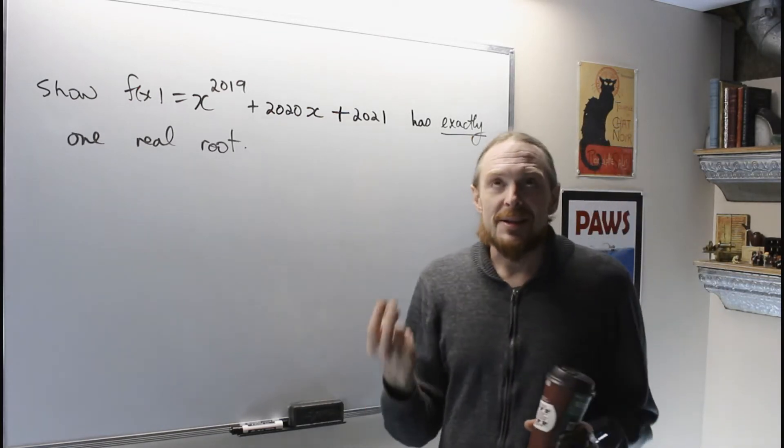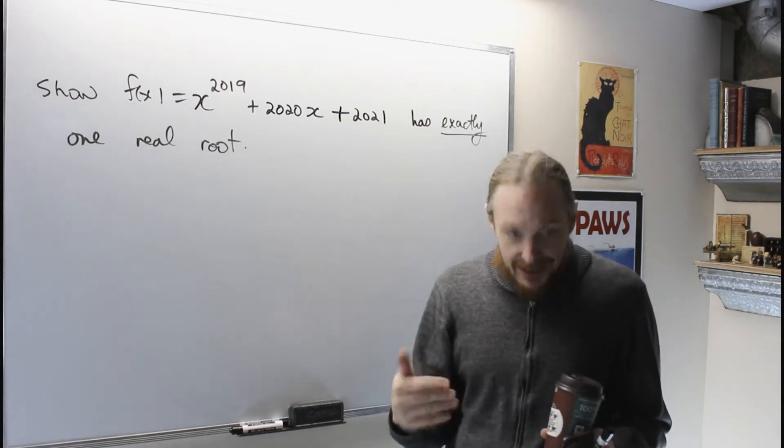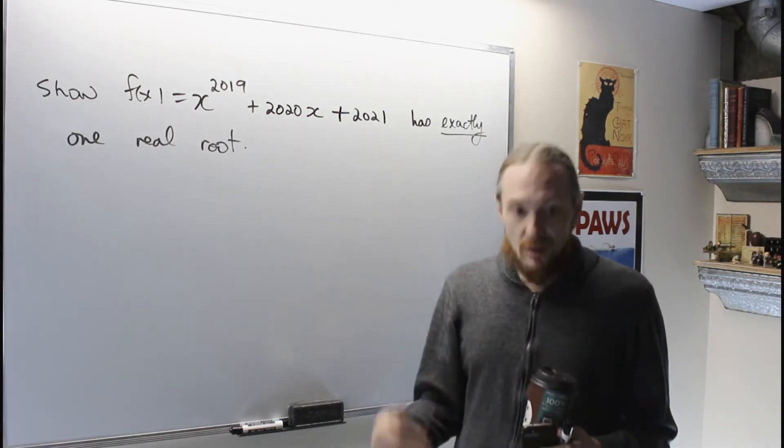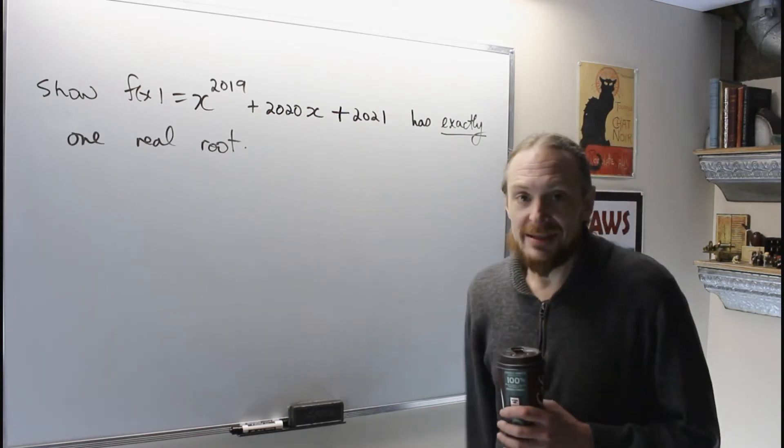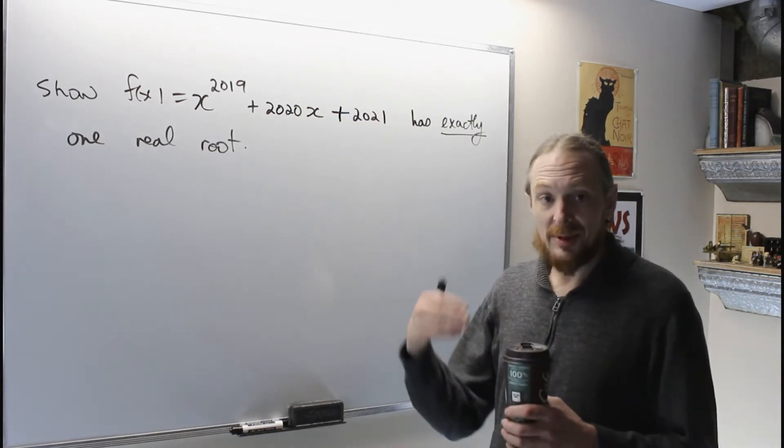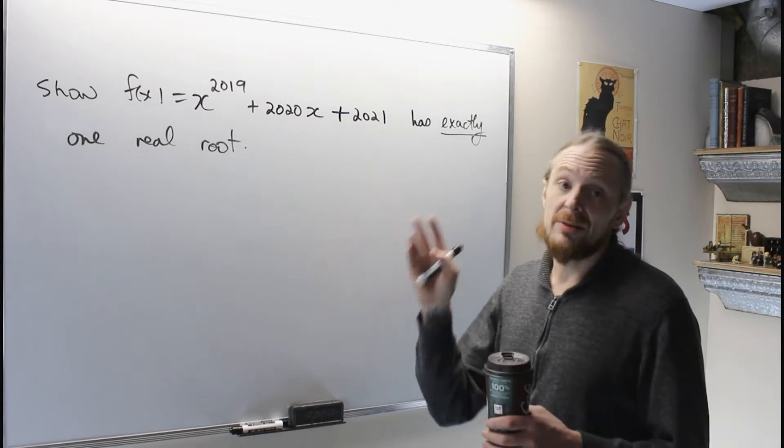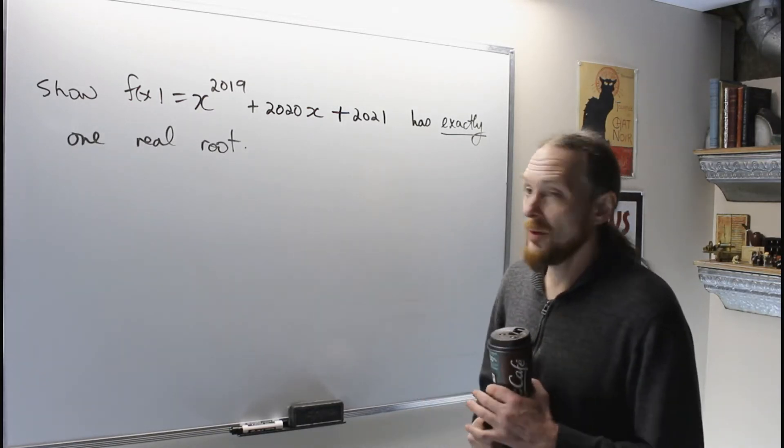The moral here is exactly has two statements. I have at least one phone and I have at most one phone. The moral of the story is I need to do two statements. I'm going to use the Intermediate Value Theorem to prove that the root exists and then I'm going to use Rolle's Theorem to show that there are no more and that will give us exactly one.